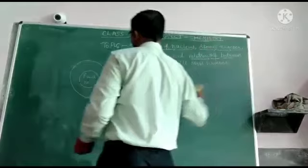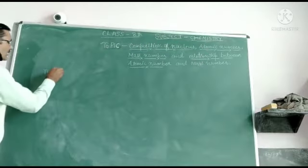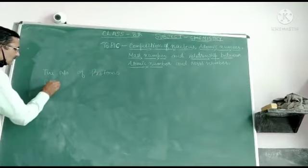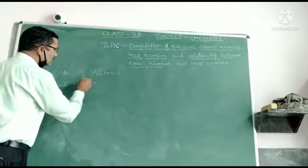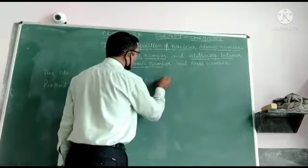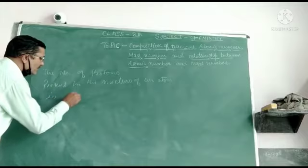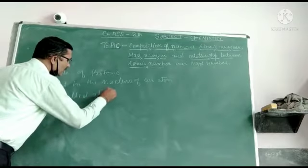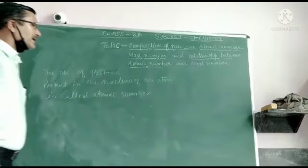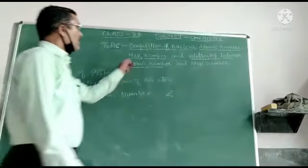Now, atomic number. The number of protons present in the nucleus of an atom is called the atomic number. Atomic number is represented by the English letter Z.